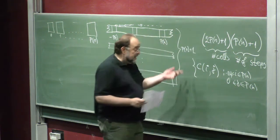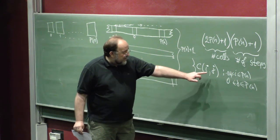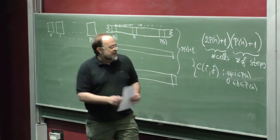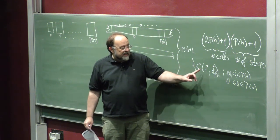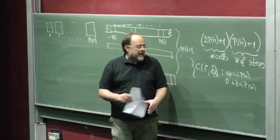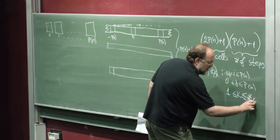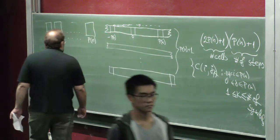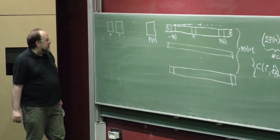There is also a special symbol, blank, which signifies that the cell has no content. So the variable C(i,j,k) is true if cell i at stage j of computation contains symbol k. We also need to be able to say that at a certain stage of computation the head scans a particular cell.